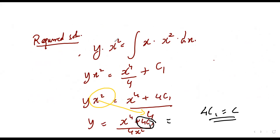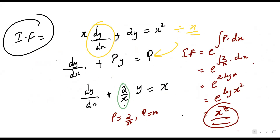The key thing for this question is knowing the integrating factor formula. The standard form is dy/dx + Py = Q. We make it into this form by dividing by x, giving P = 2/x. The integral of 2/x is 2 log x. And we use the identity: log a^x = x log a, so e^(2 log x) = x². That's why the integrating factor is x².